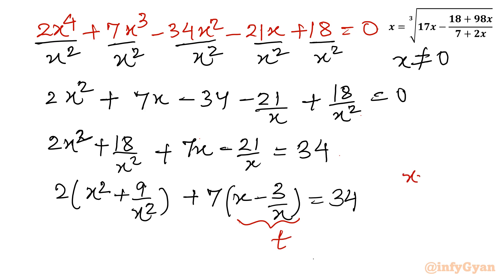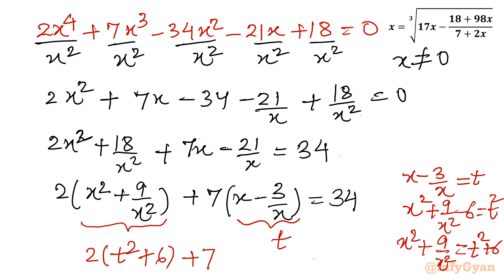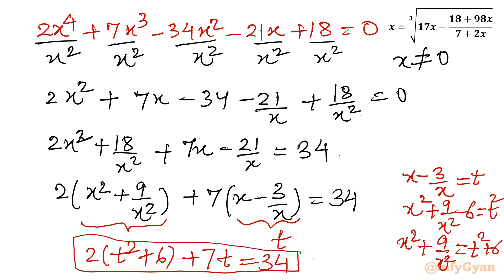Now we apply a substitution. Let t equal x minus 3 over x. Squaring this: x squared plus 9 over x squared minus 6 equals t squared, so x squared plus 9 over x squared equals t squared plus 6. Substituting back, the equation becomes 2 times (t squared plus 6) plus 7t equals 34, which is a quadratic in t.